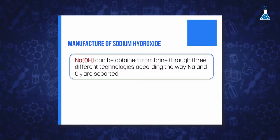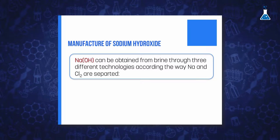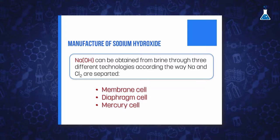This is an important process within the chloralkali industry, which allows to obtain also chlorine and hydrogen gas. There are three alternative technologies used to manufacture sodium hydroxide from brine: membrane, diaphragm, and mercury cell technologies.